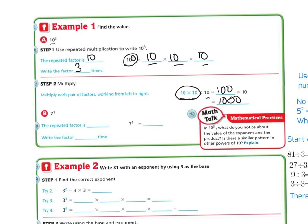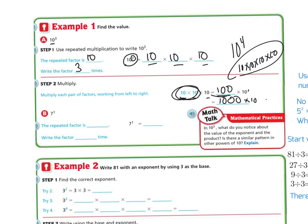If this were 10 to the 4th power, it would be 10 times 10 times 10 times 10. You'd have 10 times 10 equals 100, then 100 times 10 equals 1,000, then 1,000 times 10 equals 10,000, and so on and so forth.